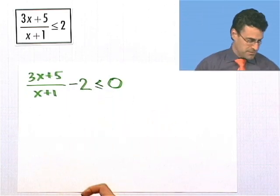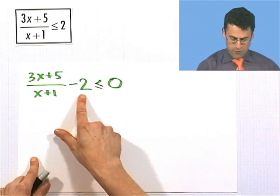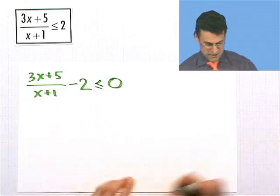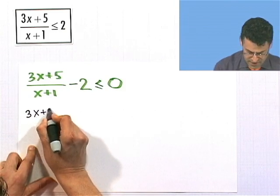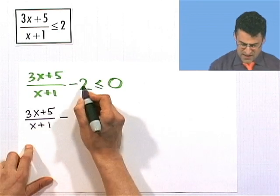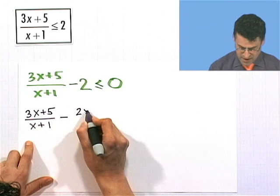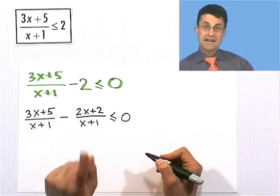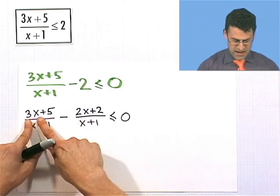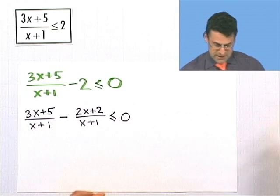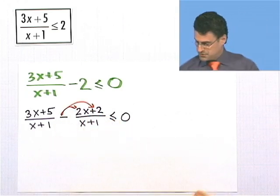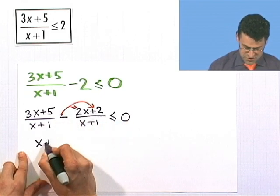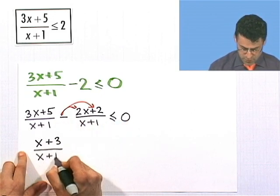Now I can actually do what we proposed. The first thing I have to do is get a common denominator. The 2 is over an invisible 1, so I multiply numerator and denominator by the quantity x plus 1. That gives me 3x plus 5 over x plus 1, minus 2 times x plus 1 — which is 2x plus 2 — all divided by x plus 1. Now you have to remember to subtract everybody. A great mistake is just to take 3x minus 2x and then 5 plus 2, but that's wrong. That negative sign has to hit everybody.